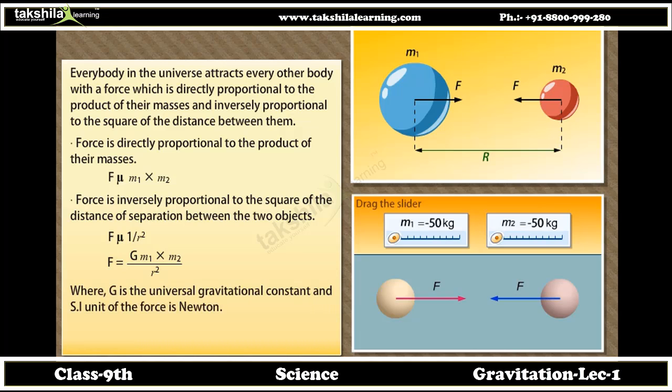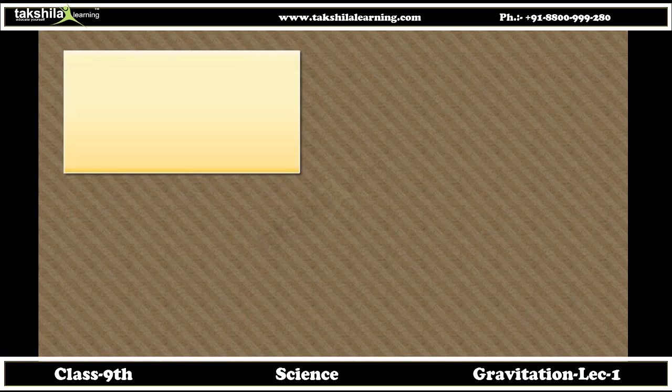Where G is the universal gravitational constant and its SI unit is Newton. The universal law of gravitation is also known as Newton's law of gravitation.